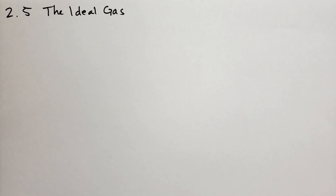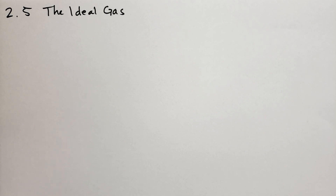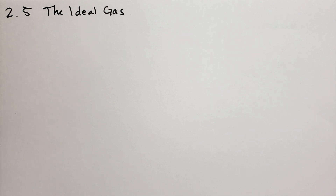Hi, this is Jonathan Gardner covering section 2.5 of Schroeder's An Introduction to Thermal Physics. In this section we're going over the ideal gas and calculating the multiplicity of an ideal gas. We're going to rely on quantum mechanics to calculate the multiplicity of the ideal gas. We'll start with one monatomic molecule and then two and then we'll calculate for N. We'll need to calculate the surface area of a hypersphere in 3N dimensions where N could be anything near Avogadro's number, the number of particles in a system.